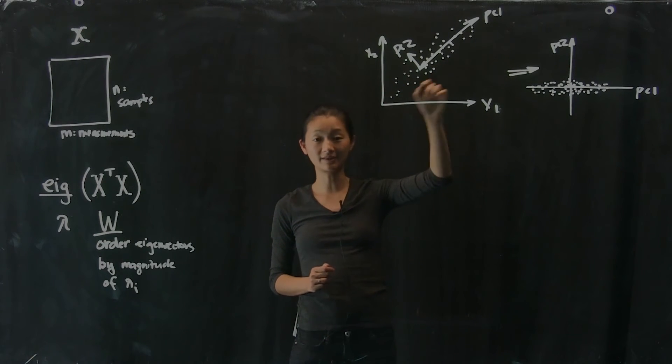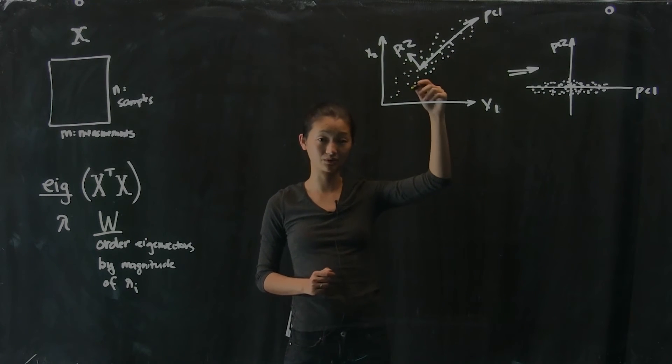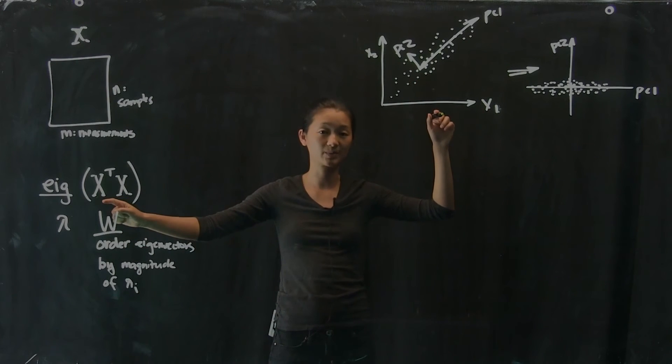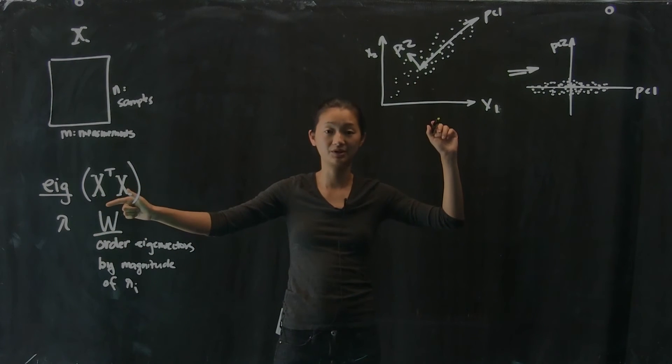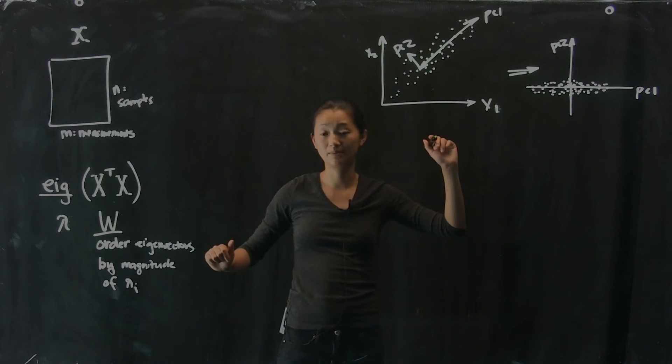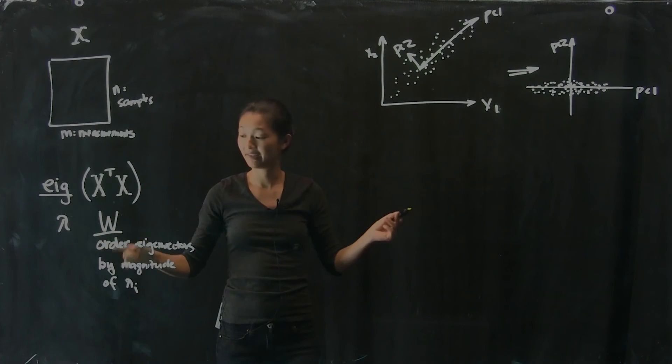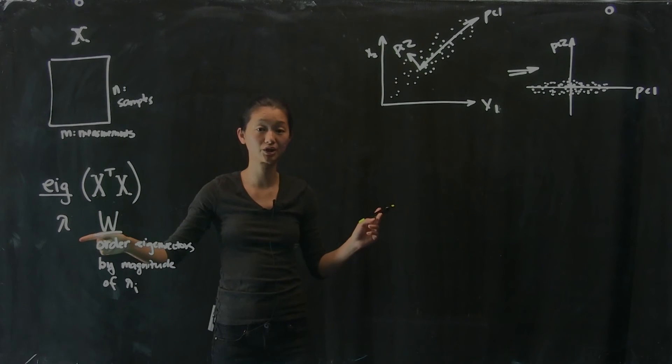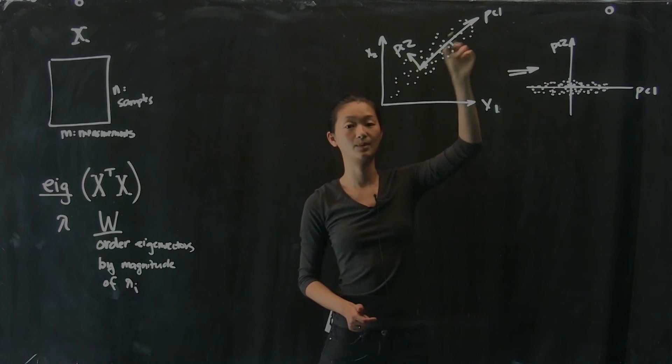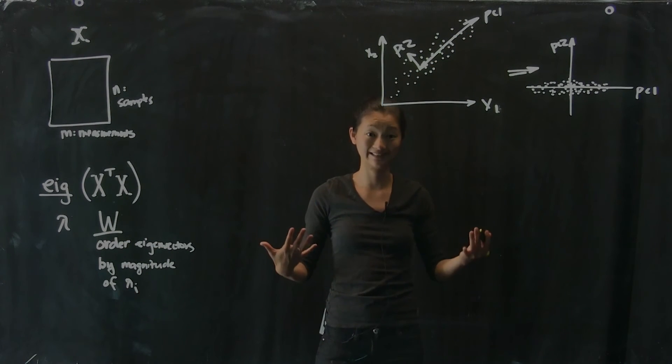So in this particular case, what I'm claiming to you is that if I took this data matrix as 2 by N data matrix, computed X transpose X, took the eigen decomposition of that, I would end up with, in this case, a 2 by 2 covariance matrix. So I would have 2 eigenvalues and 2 eigenvectors. One of them is going to be bigger. And the eigenvector that corresponds to the larger eigenvalue is going to be PC1. That's going to be what it is.